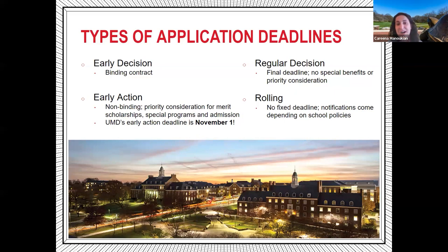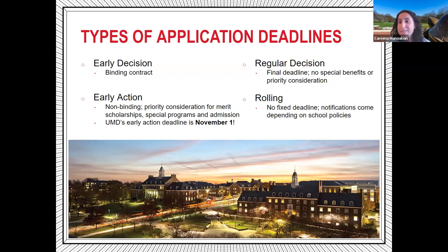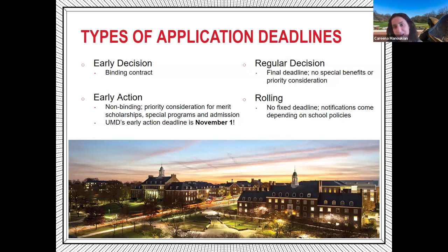The University of Maryland's early action deadline is November 1st — the best time to apply. Then there's Regular Decision: standard final deadlines with no special benefits or priority consideration. And finally, there's Rolling admission, which means there's no fixed deadline — you can apply at your leisure and hear back at varying times. With early decision, early action, and regular decision there's a set deadline, so you apply by a certain time and hear back by a certain time. With rolling, you can hear back at any specific time.